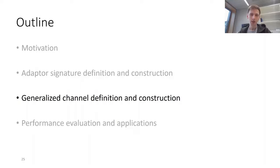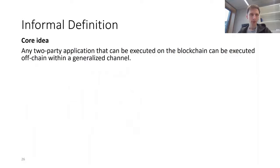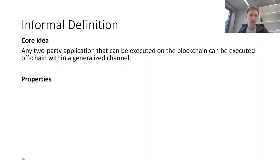I will now talk about our generalized channel definition and give a high-level overview of our construction. Informally, a generalized channel allows two parties to execute off-chain any two-party application that could otherwise be executed on the blockchain—it allows two parties to lift the execution of a two-party application from the blockchain to off-chain. For this we require three security properties and one efficiency property.